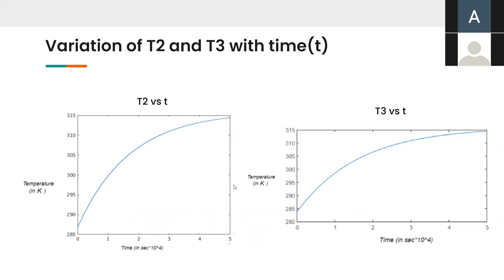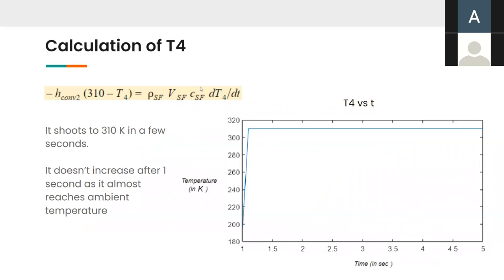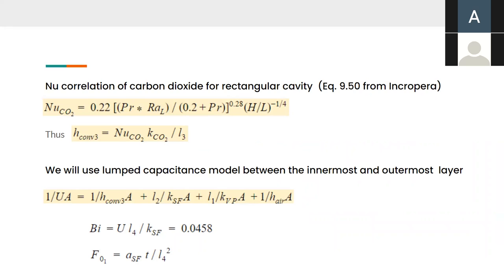Next, we move to the second phase. While analyzing T2 and T3, we found out that the temperatures almost become constant after around 35,000 seconds. So, we can consider both of them constant at around 310 Kelvin. So, using this assumption, we calculate T4, which is the temperature of the inner styrofoam layer. And we found out that the temperature shoots to 310 Kelvin in a very less time. And it doesn't increase after that because it almost reaches the ambient temperature. So, using these assumptions, we found out that the whole model can be used as a lumped capacitor model to find a relation between T5 and T infinity, which is the ambient temperature.